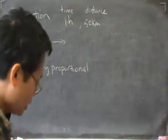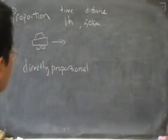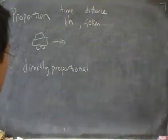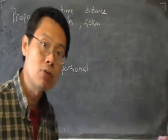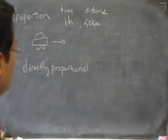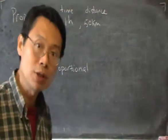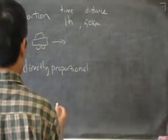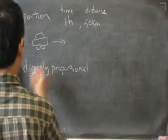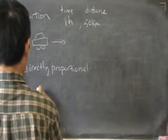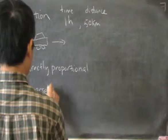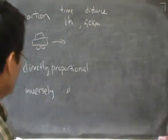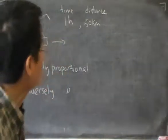The next thing about proportion is the opposite kind — the opposite of direct proportion. It is called inverse proportion, or we describe it using the words 'inversely proportional.' So what is inversely proportional? What does that mean?